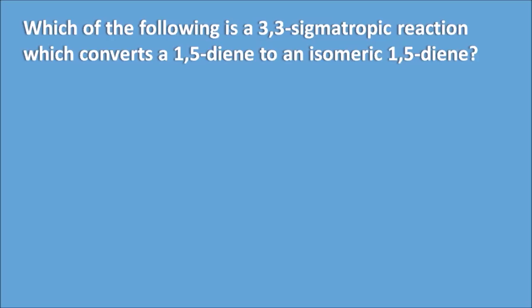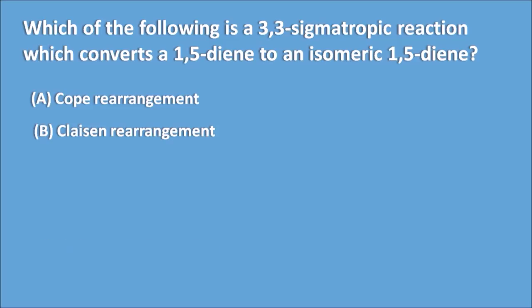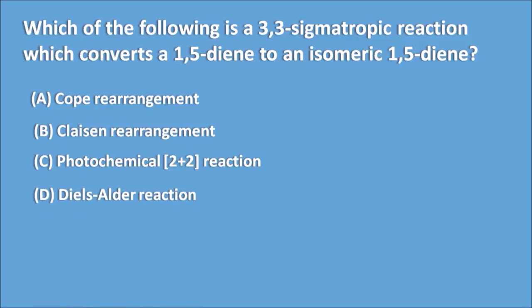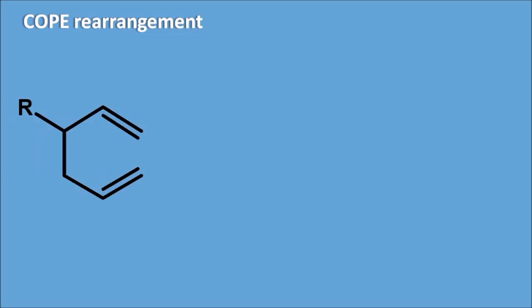Which of the following is a 3,3-sigmatropic reaction that converts a 1,5-diene to an isomeric 1,5-diene? Options: A. COPE rearrangement, B. Claisen rearrangement, C. Photochemical 2+2 reaction, D. Diels-Alder reaction. The right answer is COPE rearrangement. Taking a diene and numbering it 1 through 6, the structure is a 1,5-diene called 3-alkyl-1,5-diene.